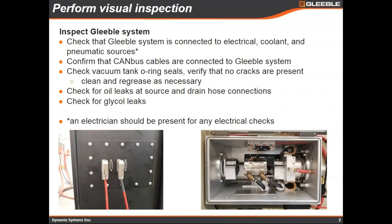Moving to the main Gleeble unit, confirm it's connected to the electrical source, the coolant source, and the hydraulic and pneumatic sources — these all go in underneath the load unit electrical box. The Gleeble will need CAN bus communication throughout the system, so the hydraulic pump, the vacuum if equipped, and any additional items using CAN bus connections shown in the bottom left picture will need to be attached — make sure they're not hanging down on the floor.